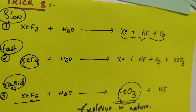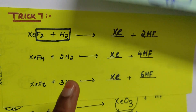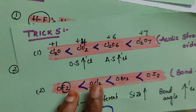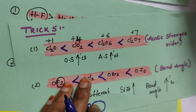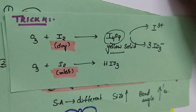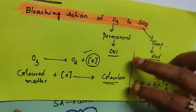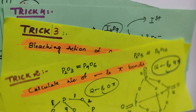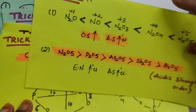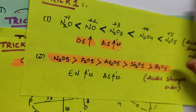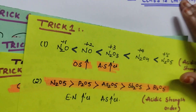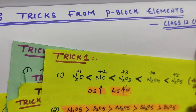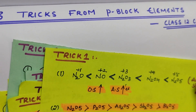These are the eight tricks I covered from p-block class 12 chemistry. Just write them in your books and practice one time — you'll know this. My name is Family, I'm your chemistry mentor. Thank you so much for watching my videos.